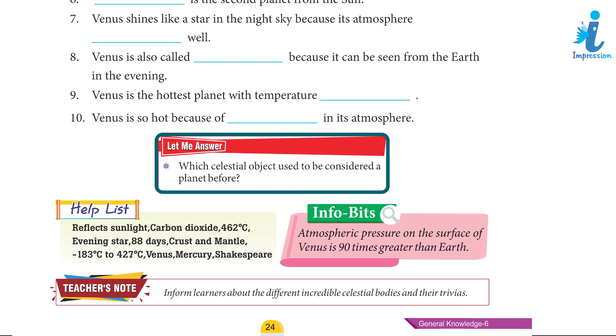Let me answer: Which celestial object used to be considered a planet before? Info Bits: Atmospheric pressure on the surface of Venus is 90 times greater than Earth.